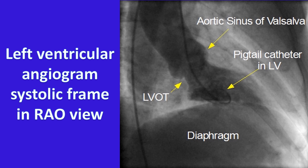The silhouette of the diaphragm is seen just below the cardiac shadow. Key abbreviations: LVOT refers to the left ventricular outflow tract; LV refers to the left ventricle; and RAO refers to the right anterior oblique view.